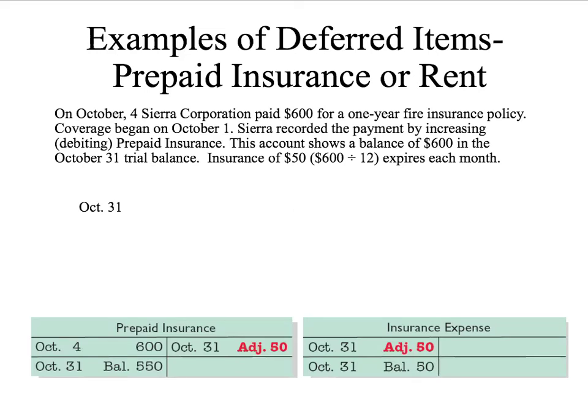On October 4th, Sierra Corporation paid $600 for a one-year fire insurance policy. Coverage began October 1st, for a whole year. Sierra recorded the payment by increasing or debiting prepaid insurance and crediting cash. But at the end of October 31st — our accounting period here is for a month — we have used up one month of it.